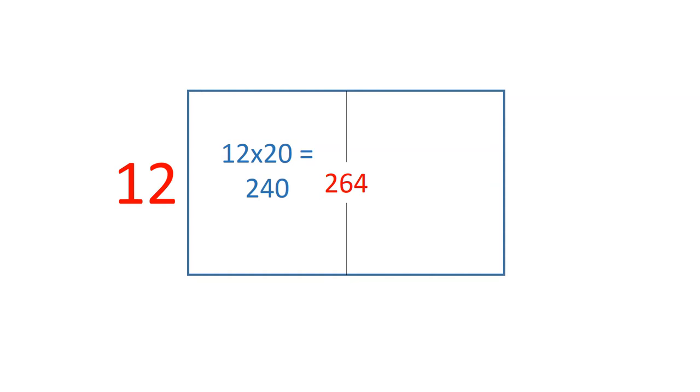When I find the area of this section, I get 240. If the entire rectangle has an area of 264, that means the other section must have an area of 24. If this section has an area of 24 and the width is 12, then the length of this section must be 2, since 12 times 2 equals 24.